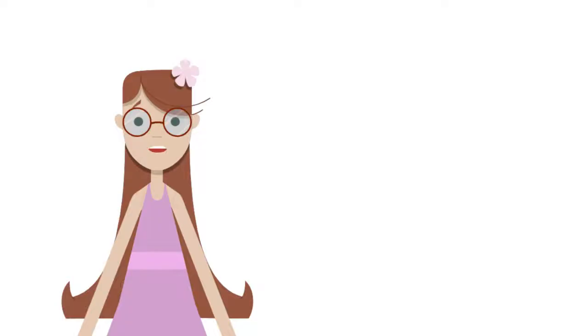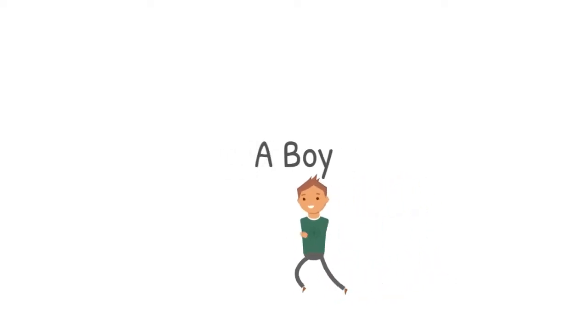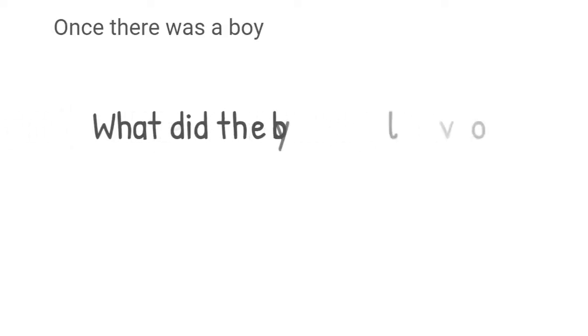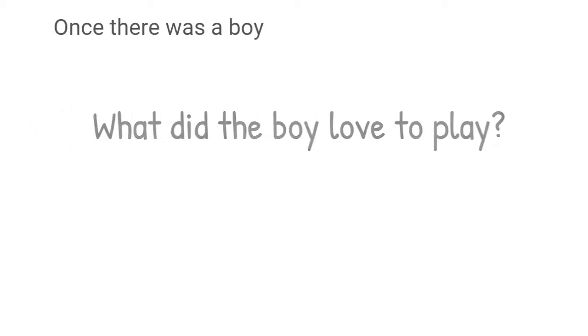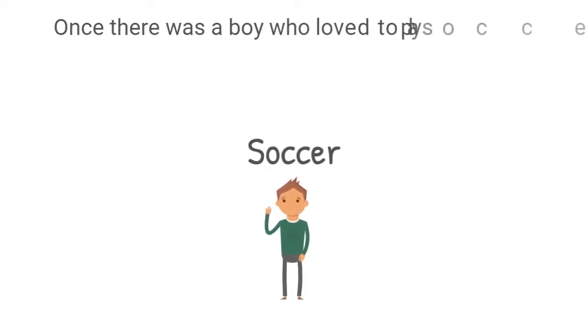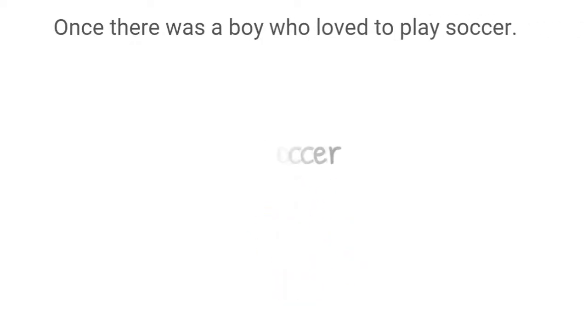Let's ask some questions about it and see if we can find some answers. Who was in the story? A boy! We can go back in our story and read the first sentence to discover who was in the story — once there was a boy. What did the boy love to play? He loved to play soccer. In our text it says, once there was a boy who loved to play soccer.